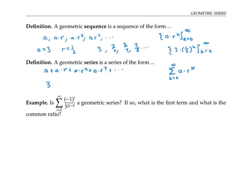For our example, our series would be three plus three halves plus three fourths plus three eighths, and so on, which could be written as the sum from k equals zero to infinity of three times one half to the k. Sometimes you might get a geometric series that's in disguise, like this one.